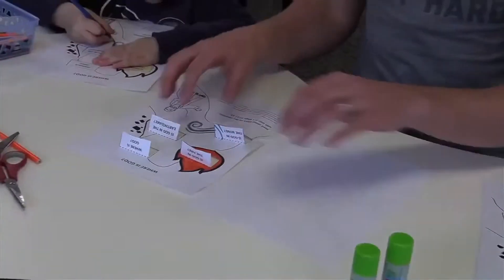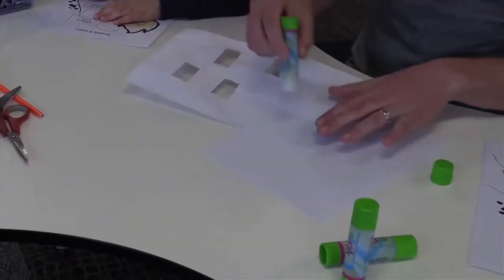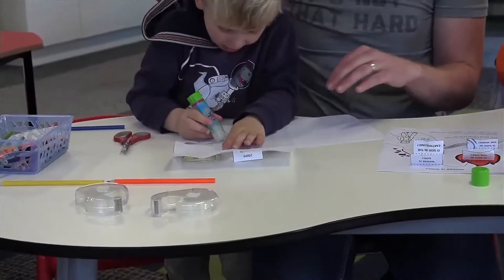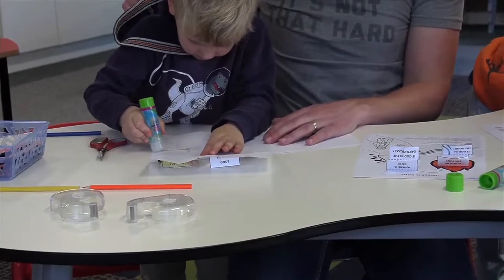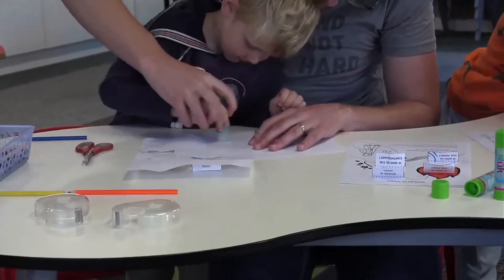So once you've cut out all four of the flaps, glue this sheet onto the blank piece of paper, a bit of glue, and then stick it down.